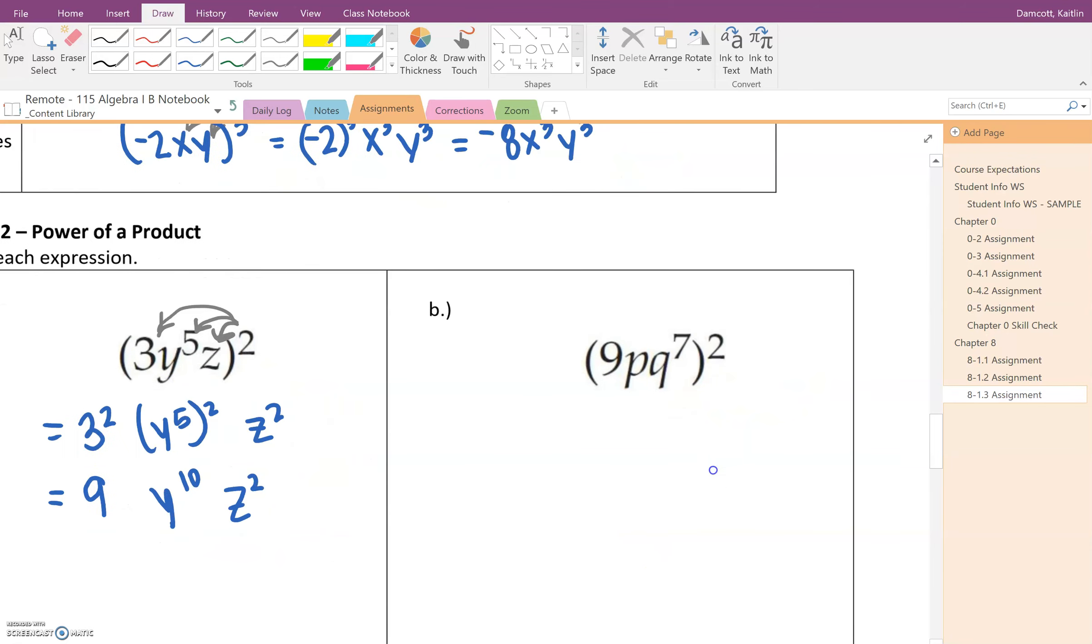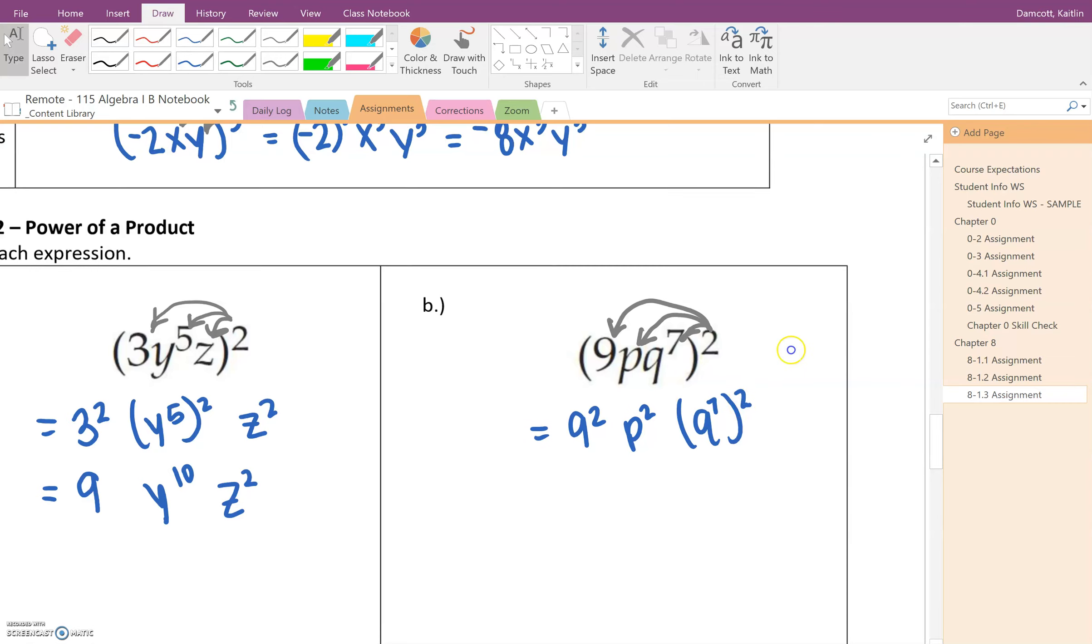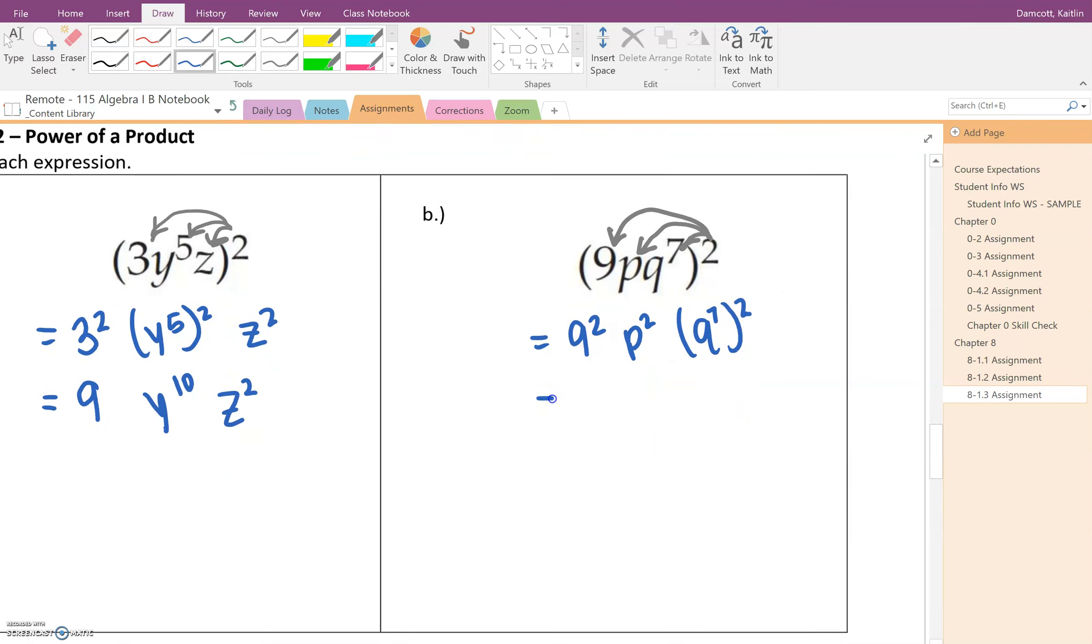Alright, let's try it again with this example here. So we're going to start by distributing the square to each factor. So we've got 9 squared, we've got p squared, and we've got q to the seventh squared. Hopefully my writing is getting a little bit sloppy, but hopefully you can read that.